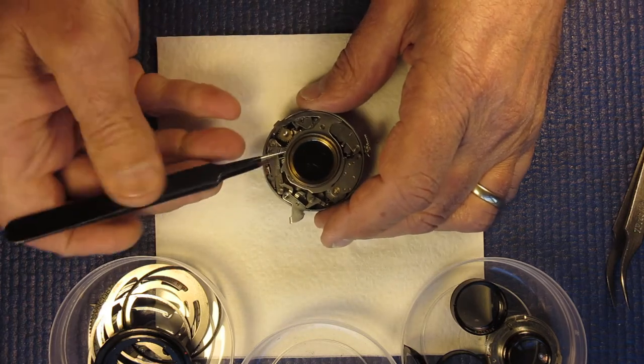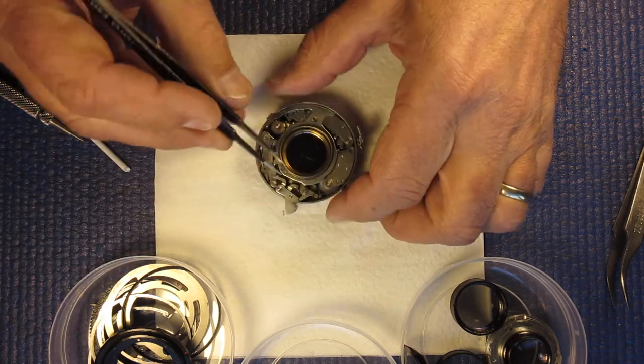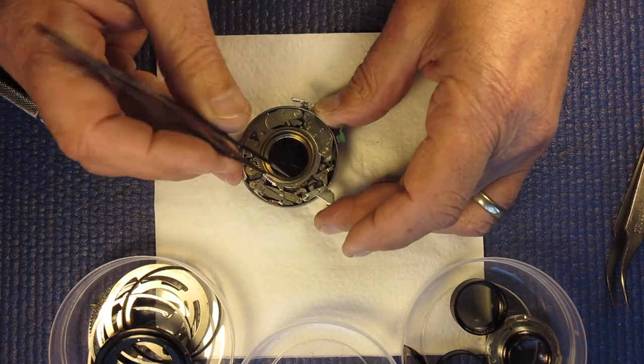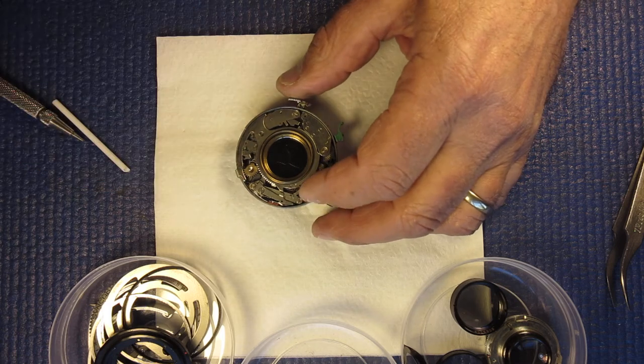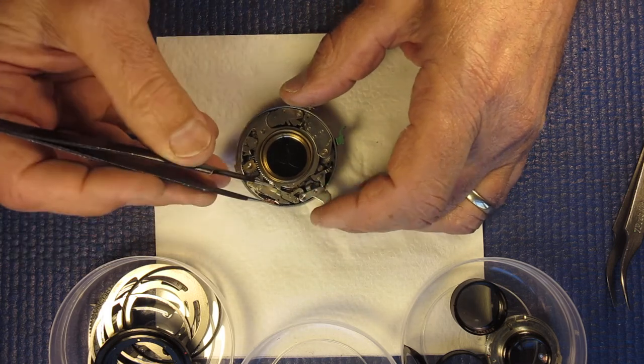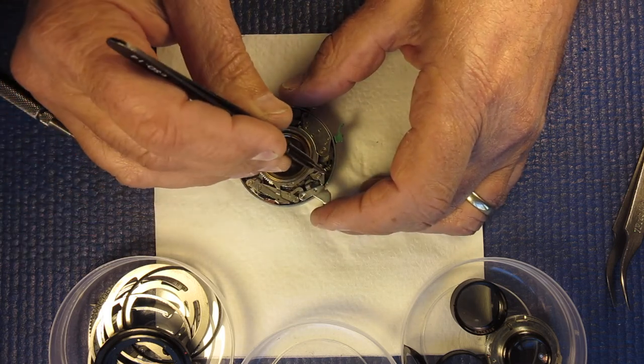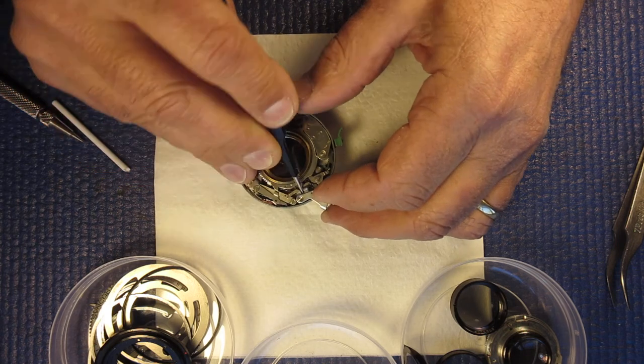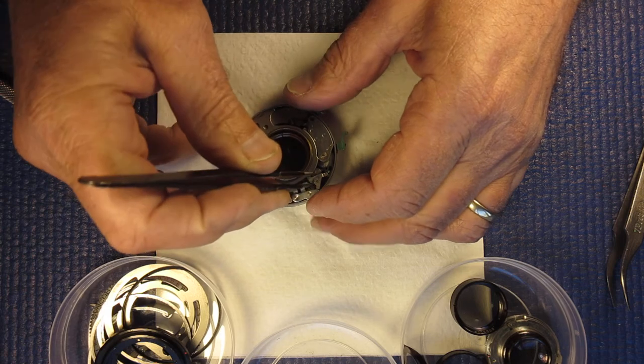Here we go then. This little latch here. That stops the shutter release from being depressed if the shutter isn't actually cocked. When the shutter's cocked, this swings out of the way. It allows you to release the shutter. So this can come off its post.